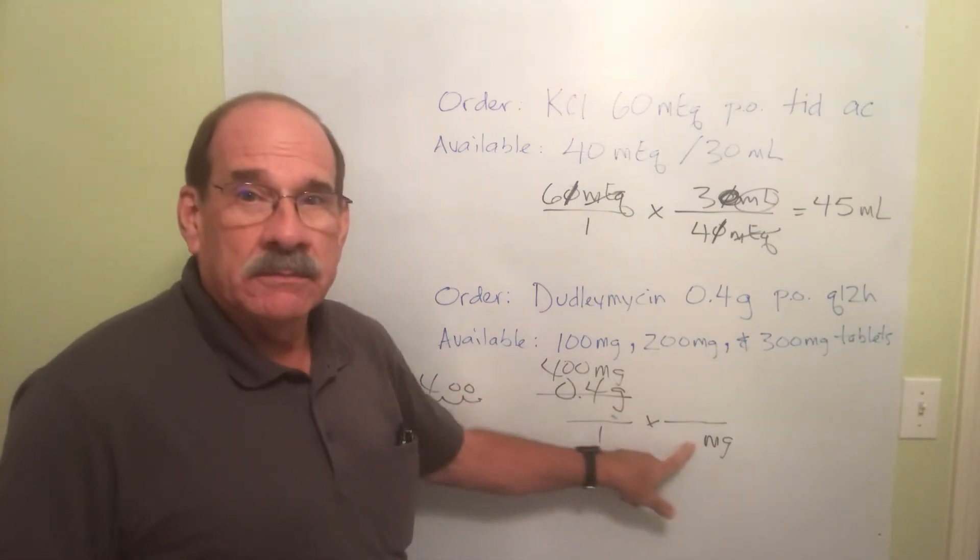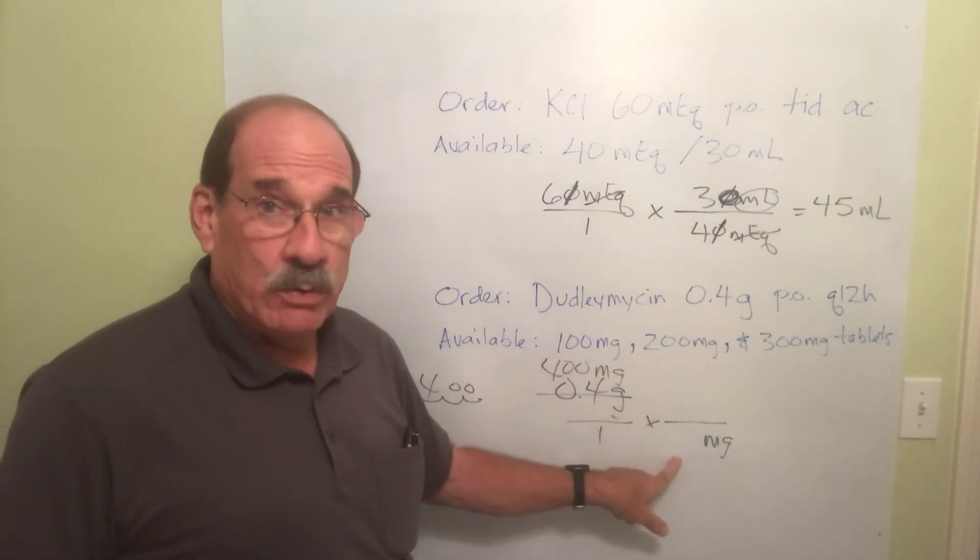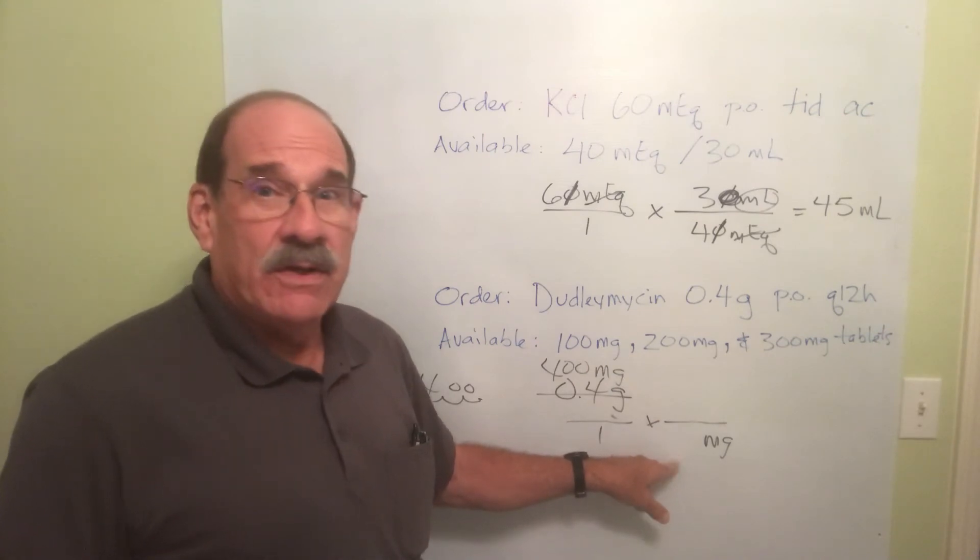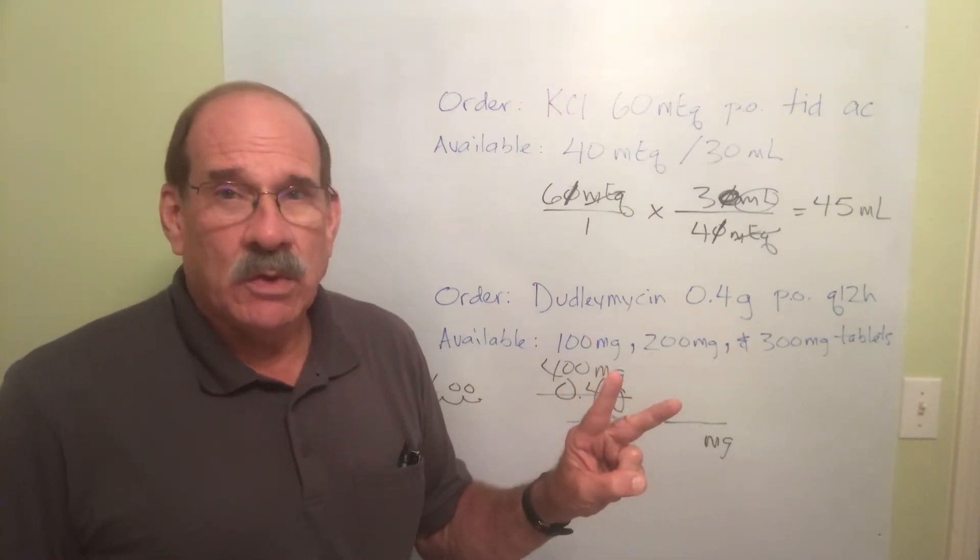Well giving two of something is better than giving four of something, right? What if I put 300 here? Well you got some kind of weird goofy number.